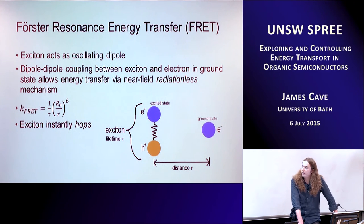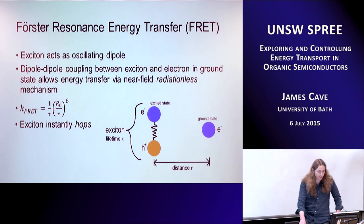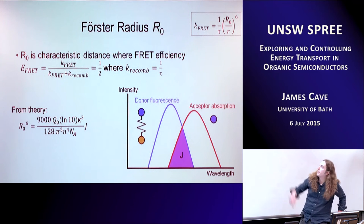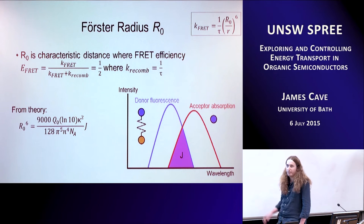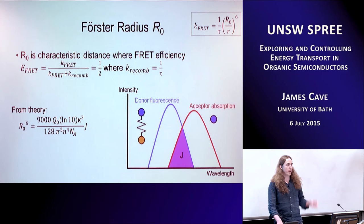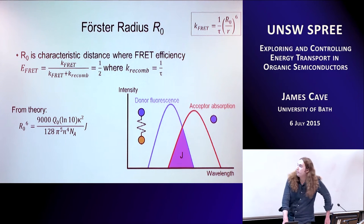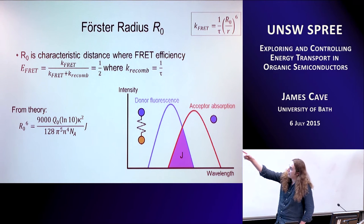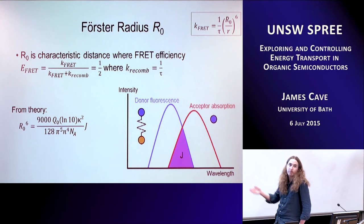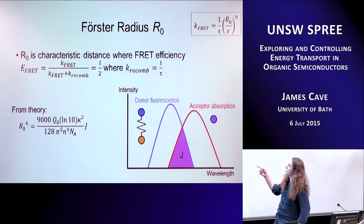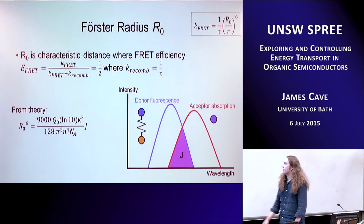The exciton will instantly hop from one place to another. The Förster radius R0 is defined such that if the exciton and its hop target are at distance R0, the quantum efficiency of the hop is 50% compared to just recombining. That means the rate of the FRET hop equals the rate of exciton recombination. The rate of FRET over the total rate — FRET plus recombination — gives 50% when r equals R0, since the sixth-power term cancels, and you get 1/τ, the recombination rate, equal to the FRET rate.